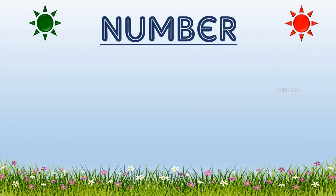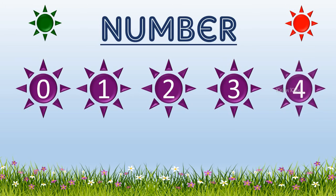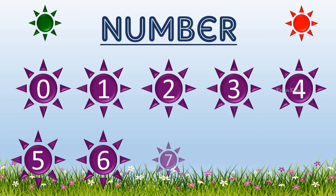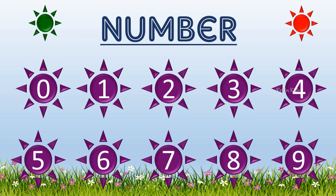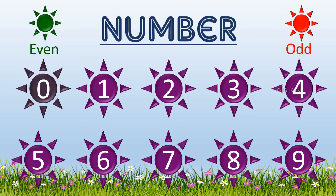Let's see all the single digit numbers — zero, one, two, three, four, five, six, seven, eight, nine — and check whether they are even numbers or odd numbers. We will use green color to mark them as even numbers and red color to mark them as odd numbers.